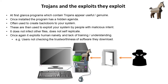Some of the simplest backdoor programs allow a hacker to remotely monitor what keys you are pressing. They extract this information, analyze it, and are able to work out a whole range of your passwords. Once again, Trojans typically exploit human naivety and a lack of training or understanding — it tends to be users not checking the trustworthiness of software they download, not thinking about the items they're clicking on, or the email attachments they are opening.